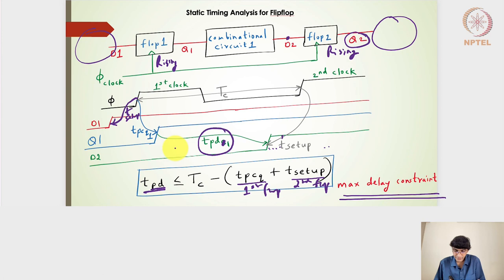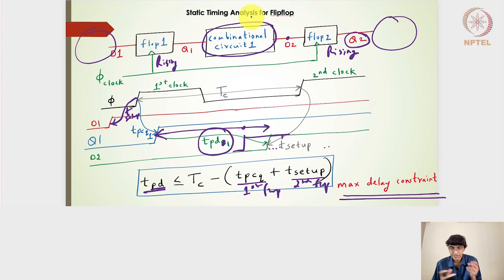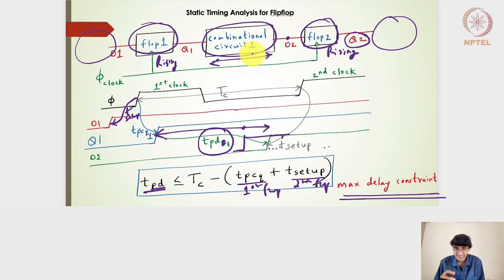So tpd must be designed to be less than or equal to the maximum delay constraint: tc − tpcq − t_setup. We only have the window between tpcq and the t_setup boundary to accommodate the combinational circuit's computation. In digital design, the flip-flop and latch parameters (t_setup, t_hold, tpcq) are fixed from the standard cell library and cannot be changed. The only design freedom is in the combinational circuit — we adjust it so that the propagation delay satisfies the constraint with no setup time violation.